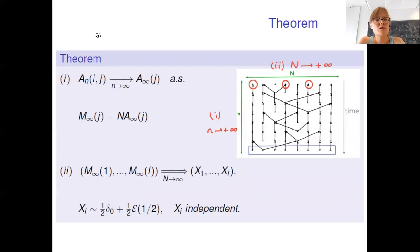Our theorem is the following. First, we prove that ANIJ converges when small n goes to infinity to A infinity of J, which is independent from I, which means that the weight of any ancestors is the same within all individuals, leaving n times steps later when small n goes to infinity.